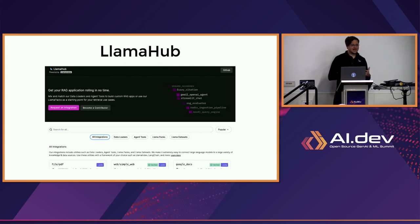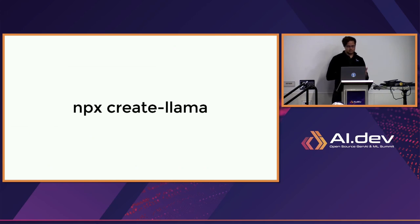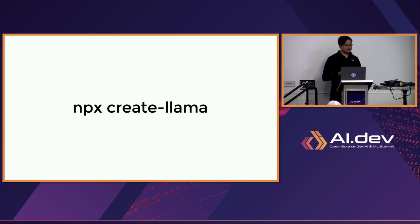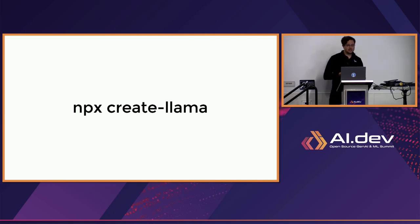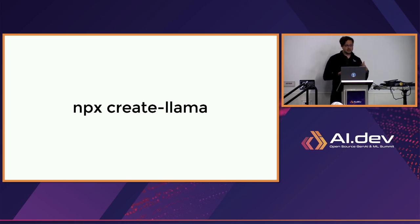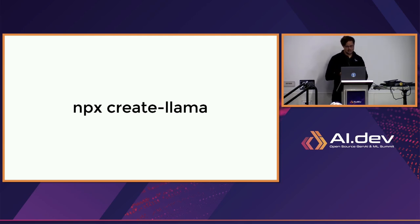I'll mention these again as they become relevant. Thirdly and most importantly, LlamaHub is a way to get these applications into production. We are not about building demos in notebooks; we are about building stuff out in the real world. There's a lot of ways that we facilitate that. One that got a lot of traction recently is a command line tool called Create Llama, loosely based on Create React App if you ever used that. It gives you a menu of options and creates a full-stack front-end back-end application that you can deploy in one click to Vercel or Render or a service like that.